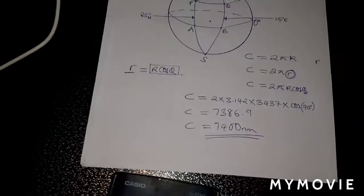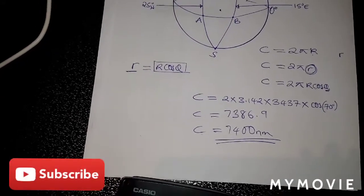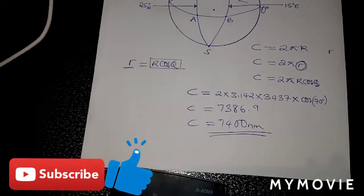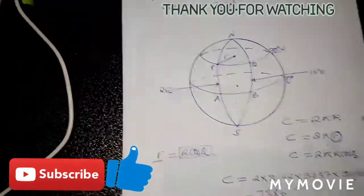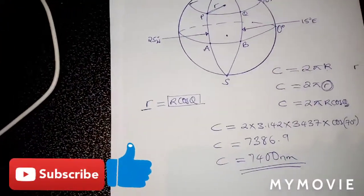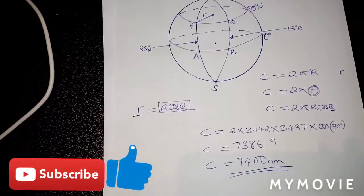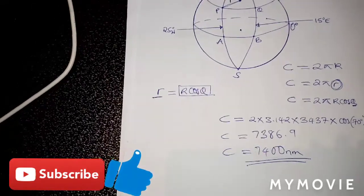So circumference is equal to approximately 7,400 nautical miles when rounding to the nearest nautical mile. That is how you can easily calculate the circumference of any small circle of latitude, or the circumference of any parallel latitude. I hope you enjoyed the video and learned something. From now on you should no longer face any challenge calculating the circumference of a small circle of latitude. Thanks guys, I'll see you next time.